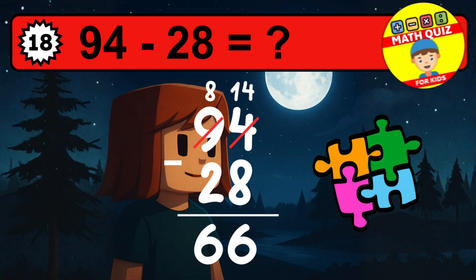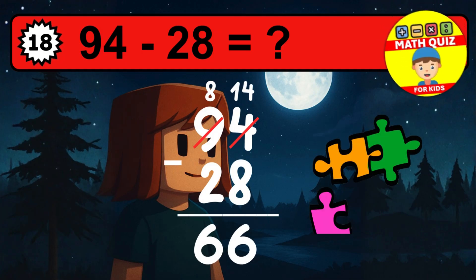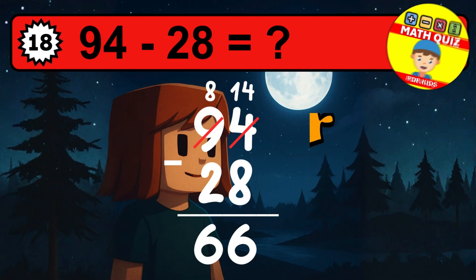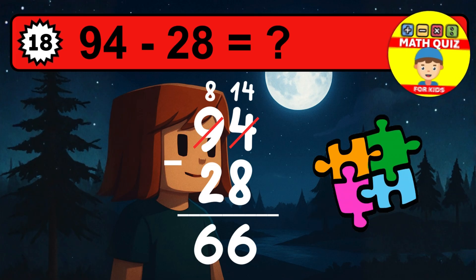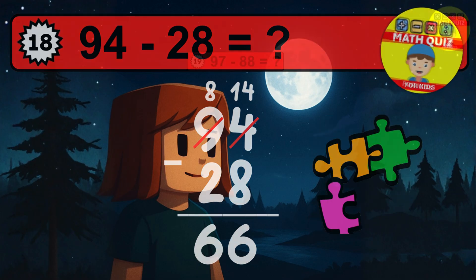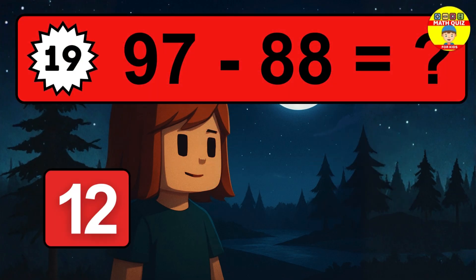Then we go to the tens. Eight minus two is six. The final answer is sixty-six.